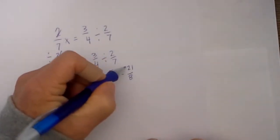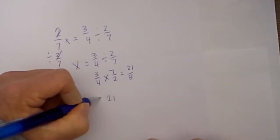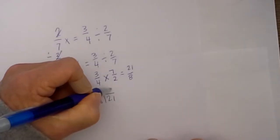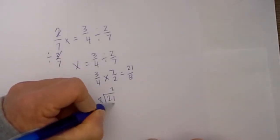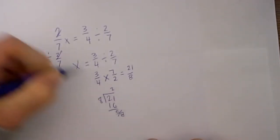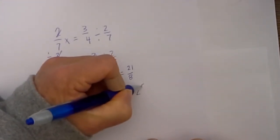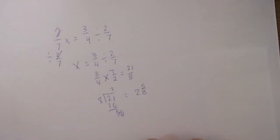If we would like to convert that into a mixed fraction we can take 21 and divide it by 8. 8 will go into 21 twice, 16, and that leaves us with 5/8 left over. So that will equal 2 and 5/8. Let's move to another example.